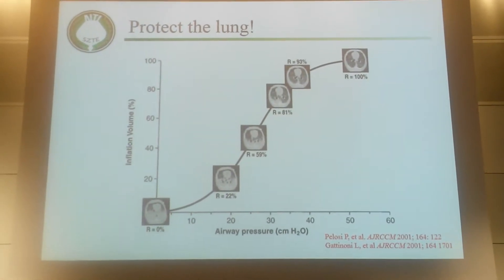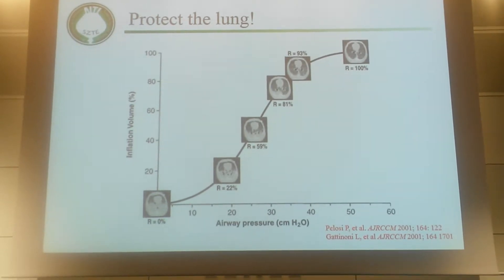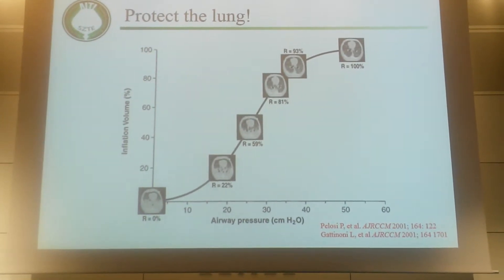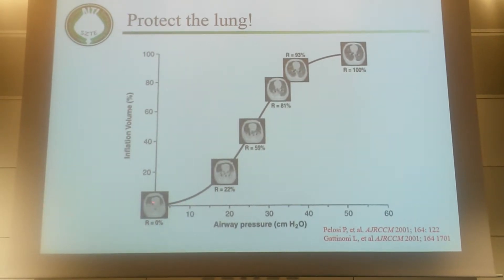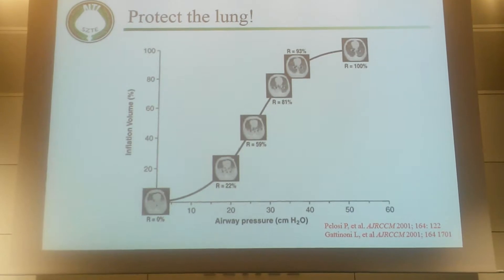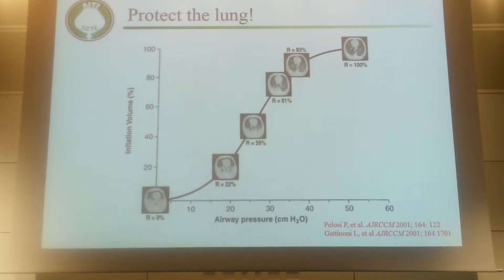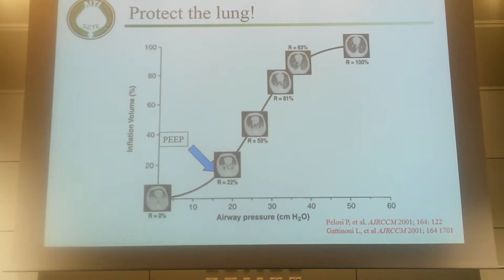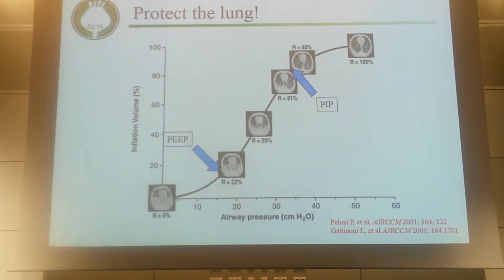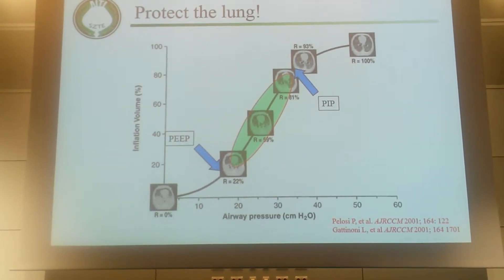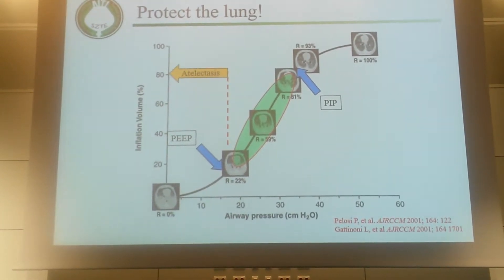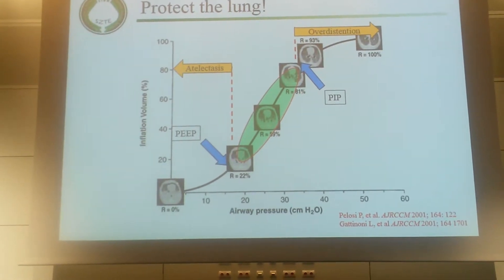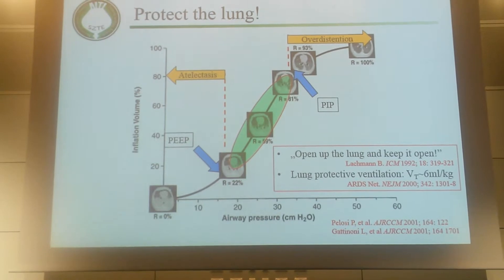Using a figure from Paolo Pelosi and Luciano Gattinoni, I want to demonstrate what happens during mechanical ventilation. This is a CT picture of a severely injured pig lung. When you increase the pressure, the aerated area increases and the lung opens up. There are two inflection points, and by and large, if you set your PEEP around the lower inflection point and your peak inspiratory pressure around the upper inflection point, ventilating between these two points gives a possibility of avoiding progressive atelectasis while preventing overdistension of well-aerated lung. This is the open lung concept: open up the lung and keep it open.